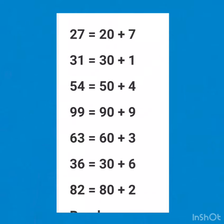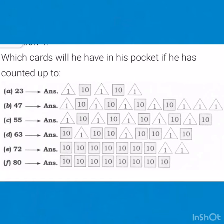36 is equal to 30 plus 6. 82 is equal to 80 plus 2. 12 is equal to 10 plus 2. 19 is equal to 10 plus 9. 11 is equal to 10 plus 1. 17 is equal to 10 plus 7.